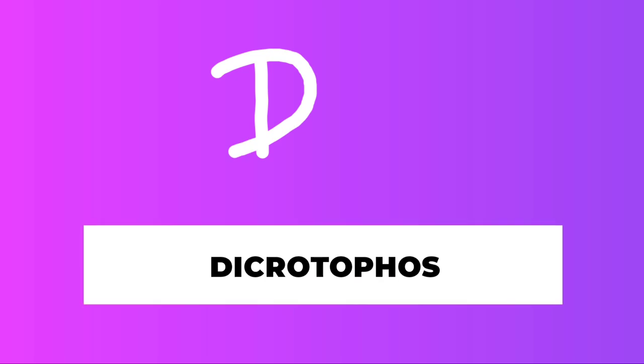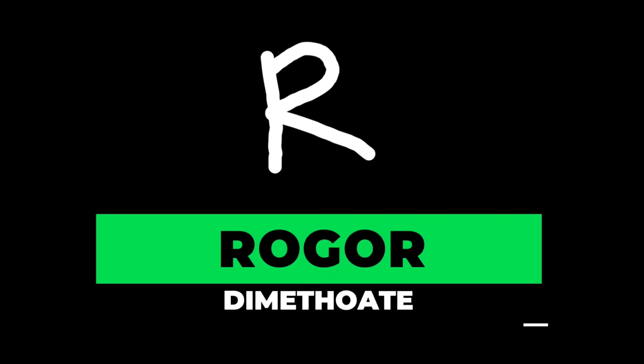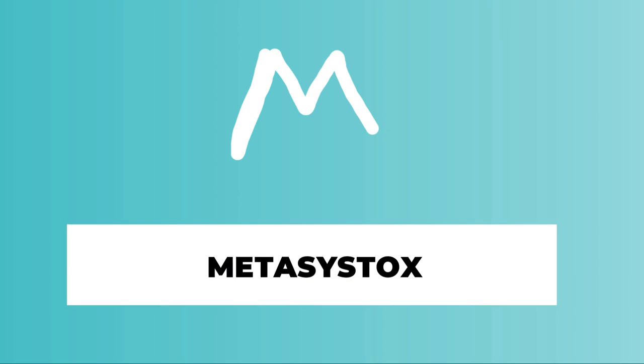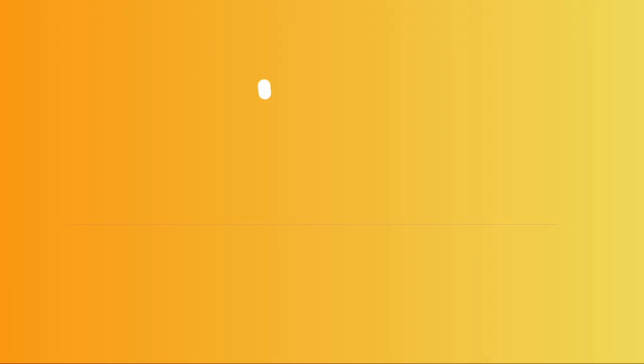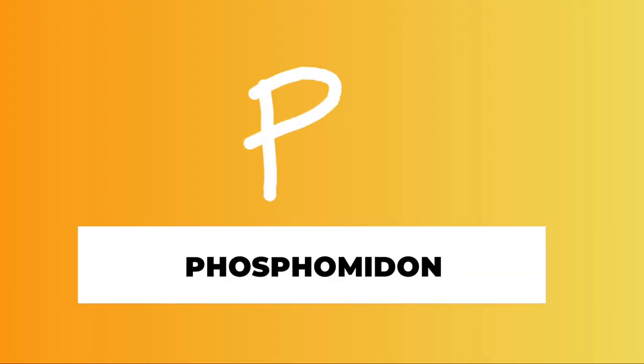D for dichrotophos, R for rogor, M for metasystox and monocrotophos, P for phosphamidon.